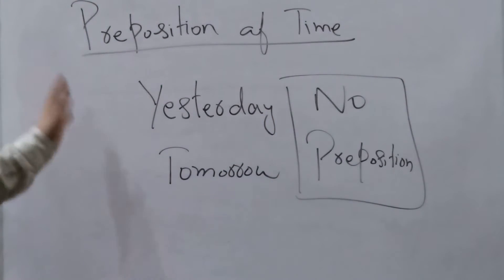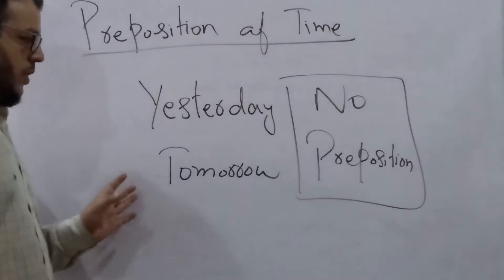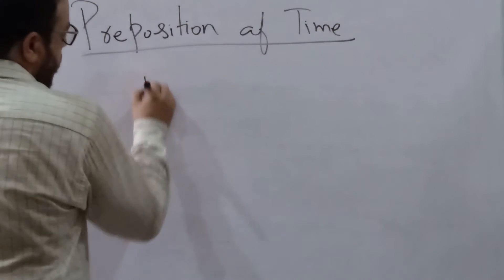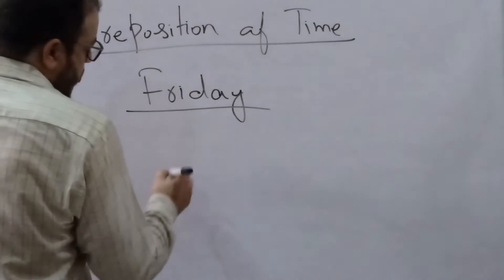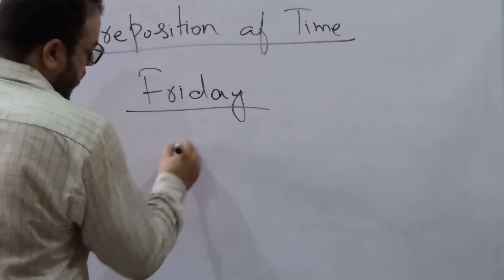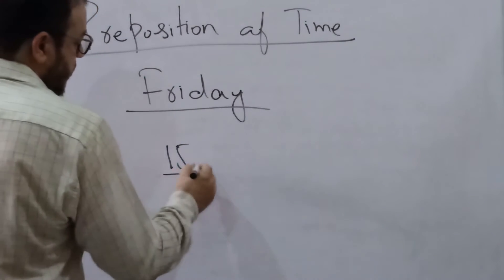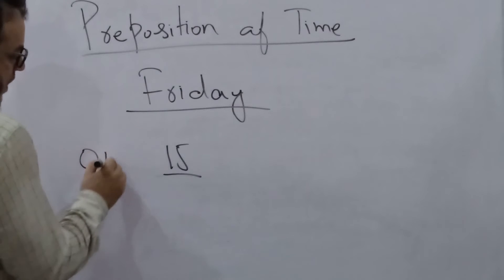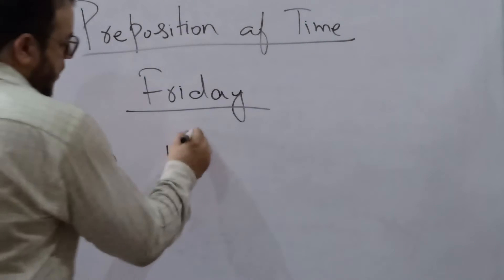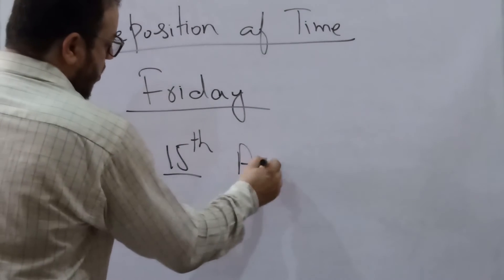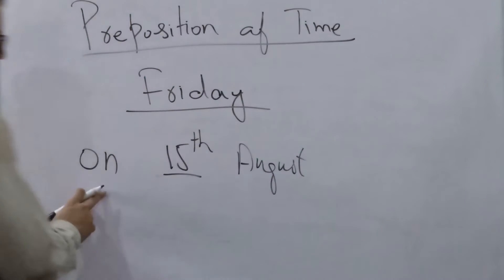Yesterday, tomorrow - just yesterday and tomorrow. A day which we have written in words, Friday. We will write mathematically, like 15. So we will have on. 15 August, so we will have on.